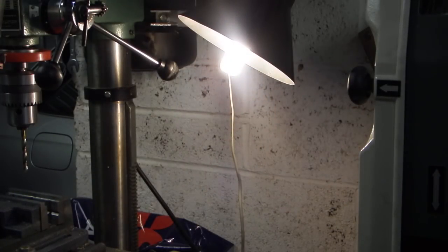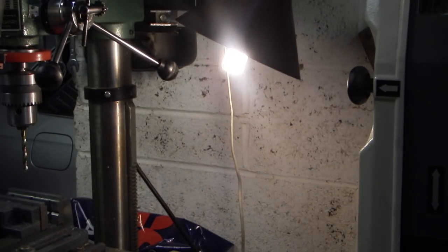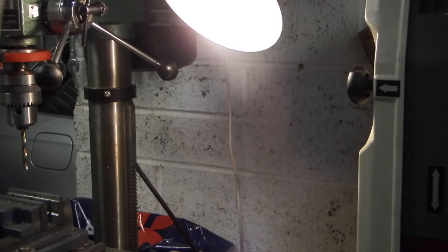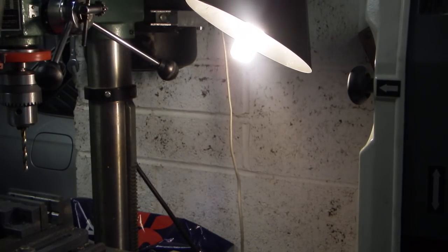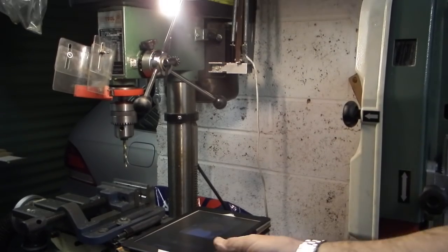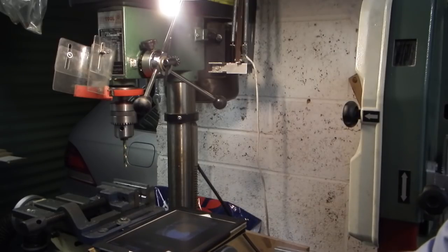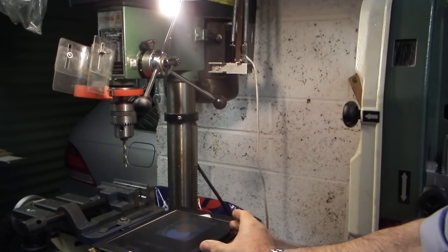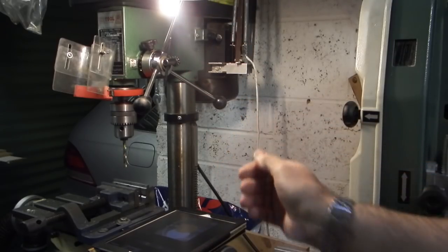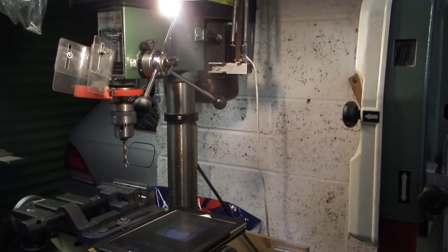This is an angle poise lamp that's fitted on my drilling machine and it has an energy saving bulb in it and what I want to find out is how much light this gives. With the lamp over the top of the machine and my light meter on the table of the drilling machine, that's the iPad, this gives me a reading of 143 lux there.